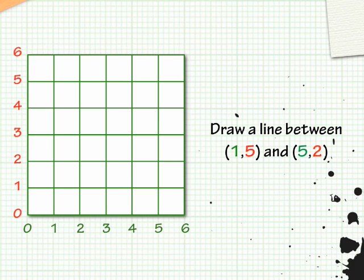So a simple line between coordinates 1-5 and 5-2 would be drawn like that. Dead easy — just little coordinates that it draws lines between.